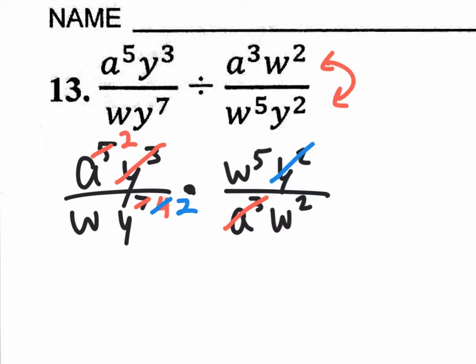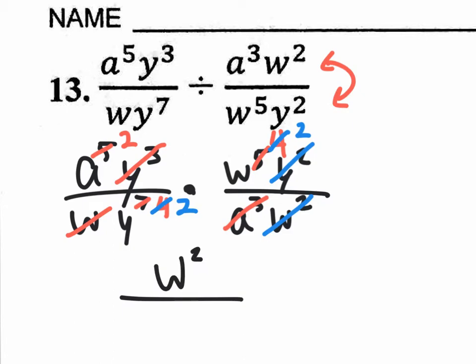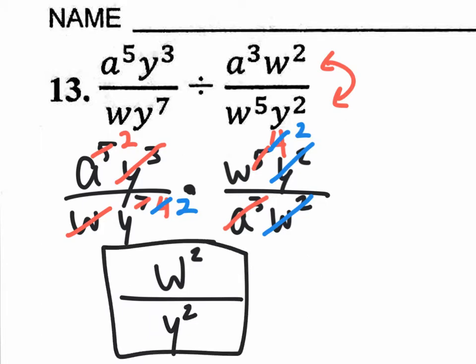Now let's go for the w's. I have 1 w right here on the bottom, which cancels out with 1 of these, and you'll have 4 left over. And then we could cancel out these 2 w's on the bottom with 2 of these, and you'll have 2 left over up on top. So what do we have left? We have w squared, so that's what's going to be up on top — w squared. And on the bottom, we have y to the 2nd power. So that's our answer right there, number 13.